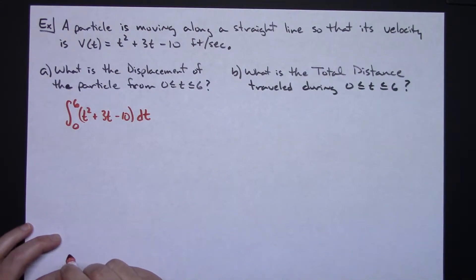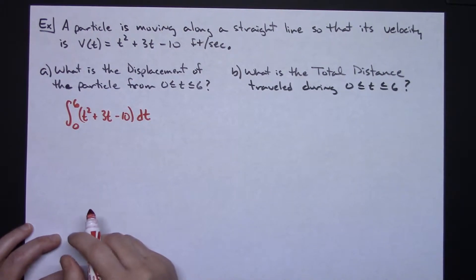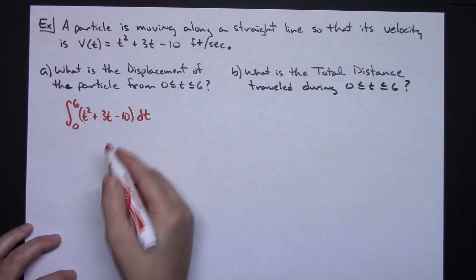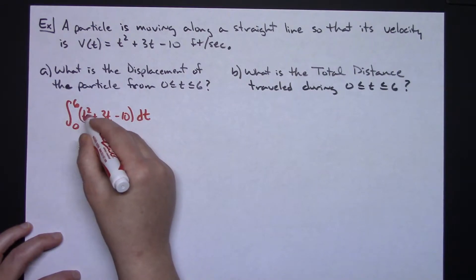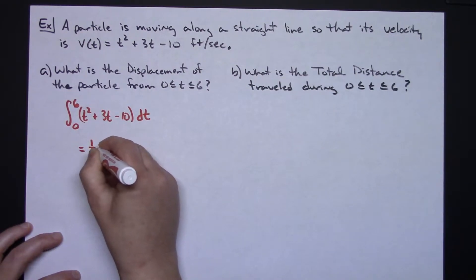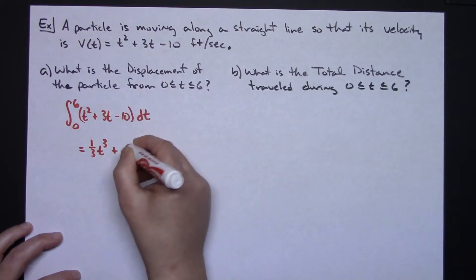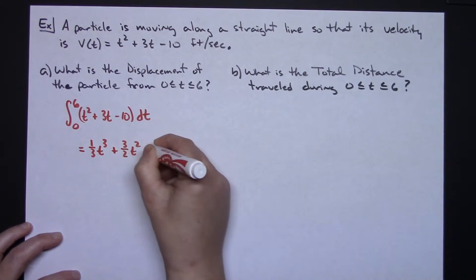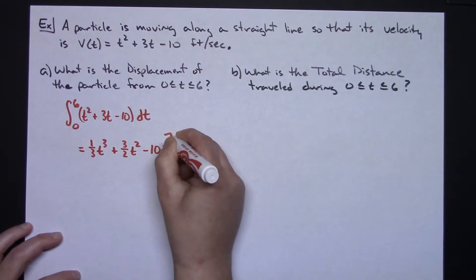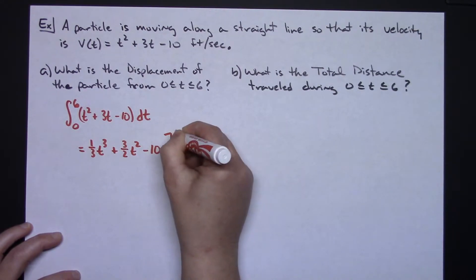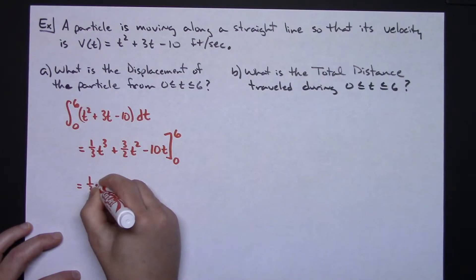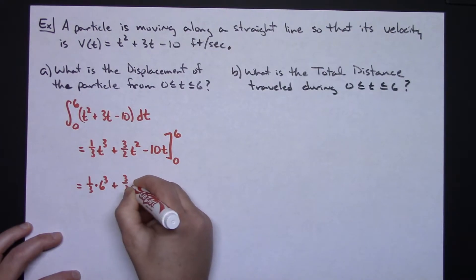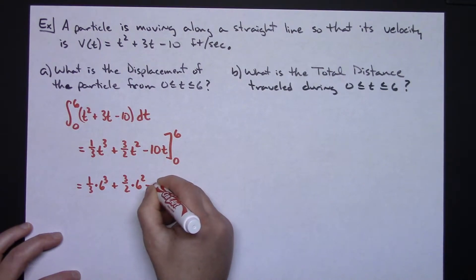Displacement is a straightforward integration of that velocity function. We would set up the integral on the interval from zero to six of t squared plus 3t minus 10 dt. Integrating, I would have one-third t cubed plus three-halves t squared minus 10t, and then we would need to evaluate that on the interval from zero to six. Plugging in six: one-third times six cubed plus three-halves times six squared minus 60, minus zero.